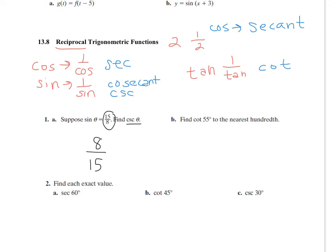Then the second one: find the cotangent of 55 degrees to the nearest hundredth. This is the same thing as finding 1 over the tangent of 55. So 1 over the tangent of 55 in your calculator — make sure you're in degree mode. I do 1 divided by the tangent of 55 and get approximately 0.70.